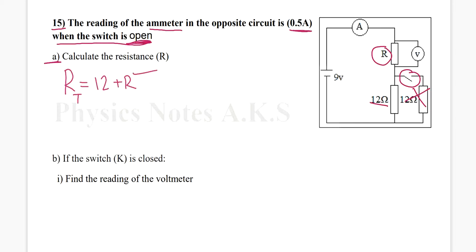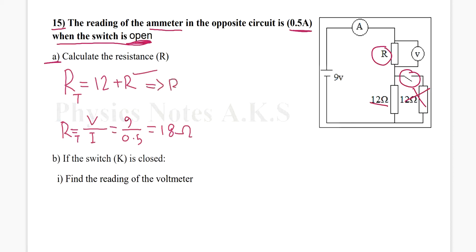Let's find the total resistance RT. RT equals the voltage supplied by the battery divided by the current — the reading of the ammeter — so it's 9 over 0.5, which equals 18 ohm. From here I can find R: R equals RT minus 12, so it's 18 minus 12, which equals 6 ohm.